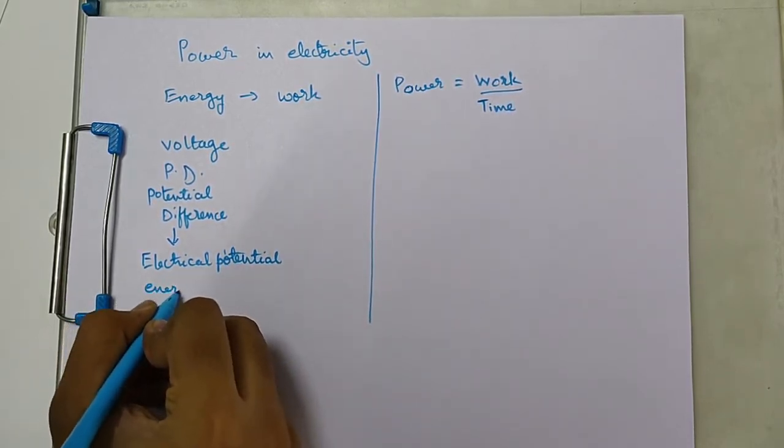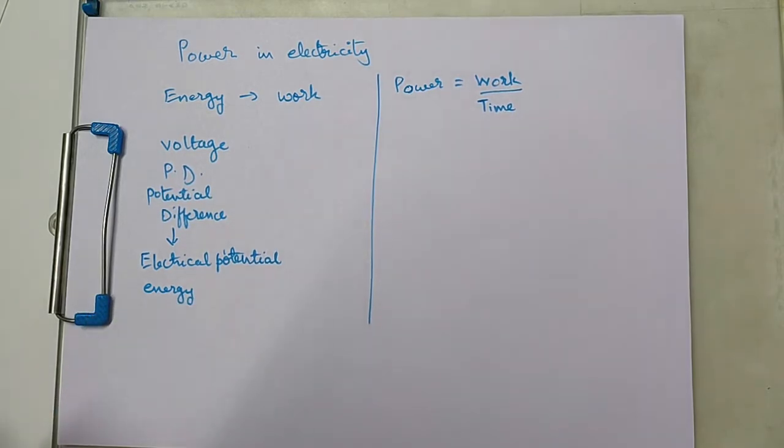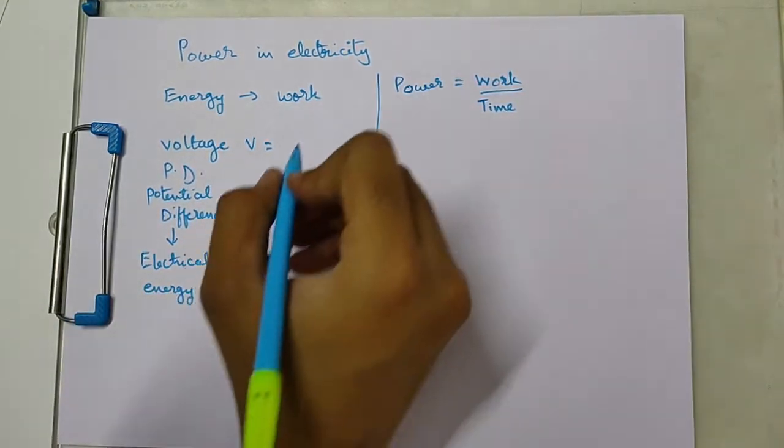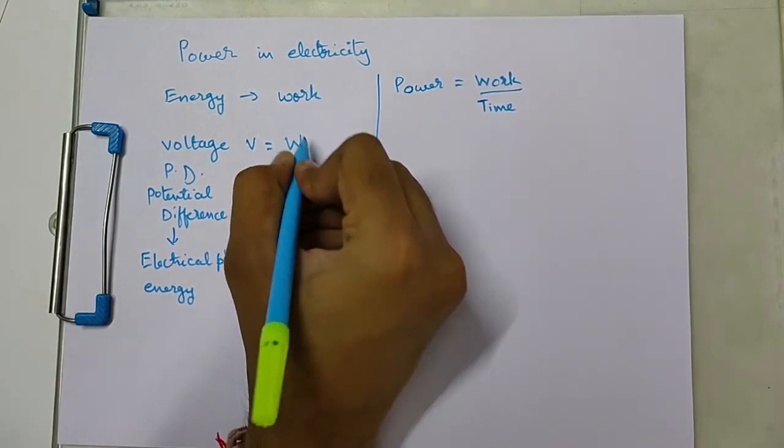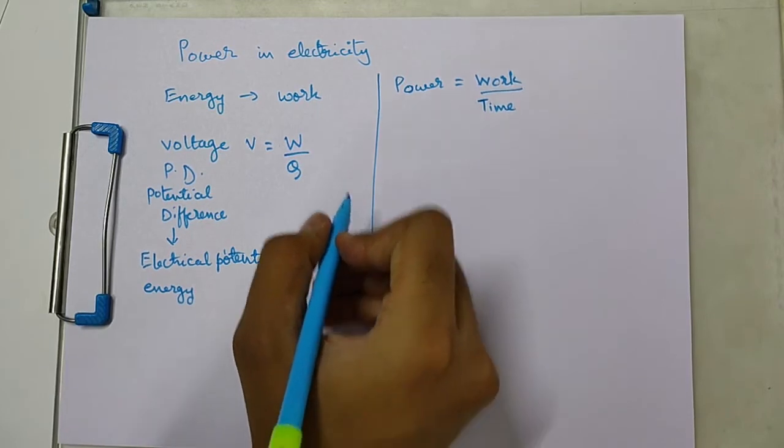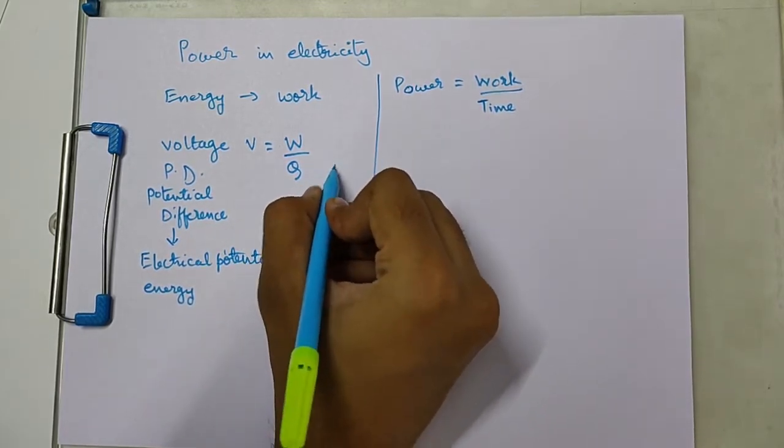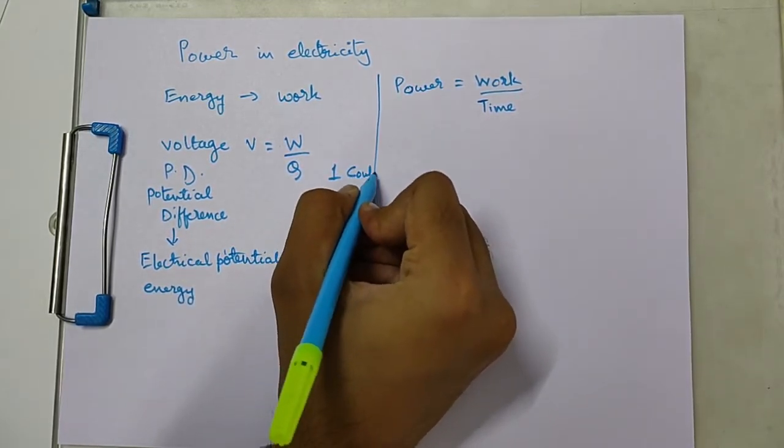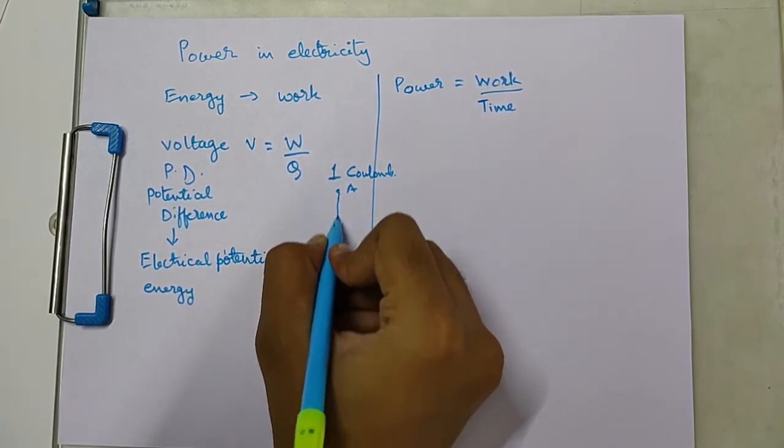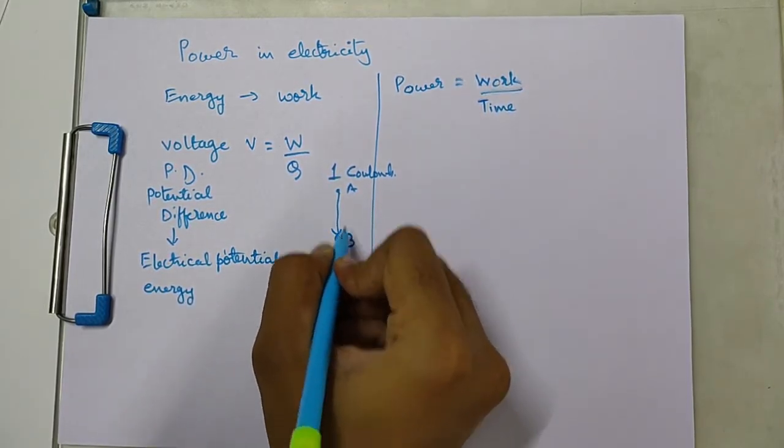V is defined as the work done in moving a unit charge, which means work done in moving one coulomb of charge from one point, say for example point A, to point B.